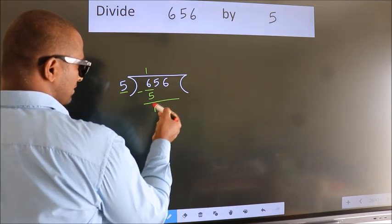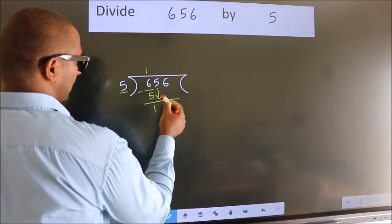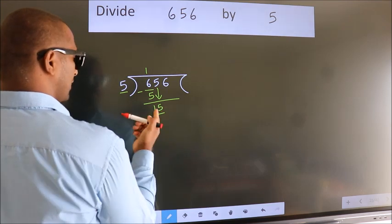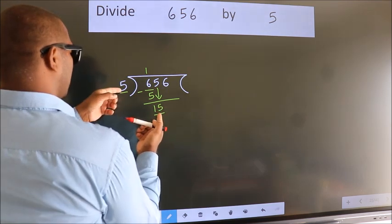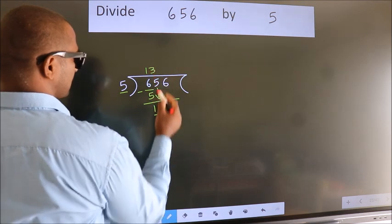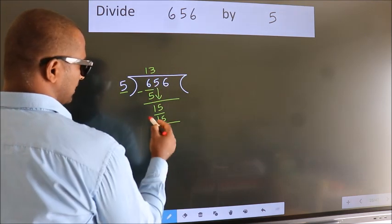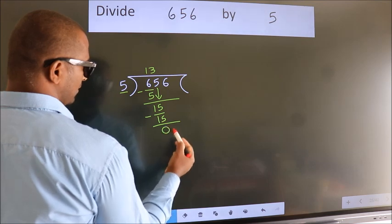After this, bring down the beside number. So, 5 down, giving us 15. When do we get 15? In 5 table, 5 threes is 15. Now we subtract. We get 0.